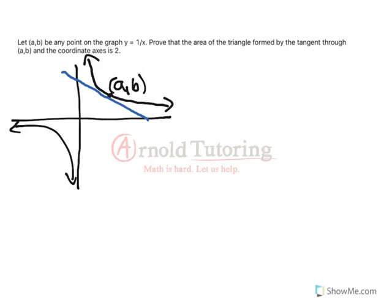And they say the area of the triangle formed by the tangent and the coordinate axes, so both axes. In other words, so I'm going to label these points where they intersect.